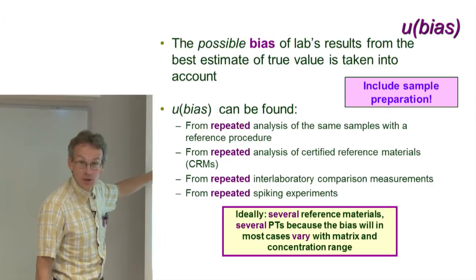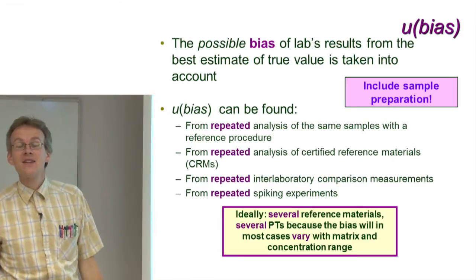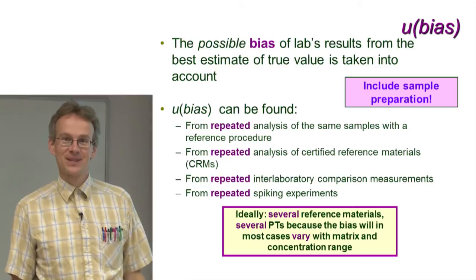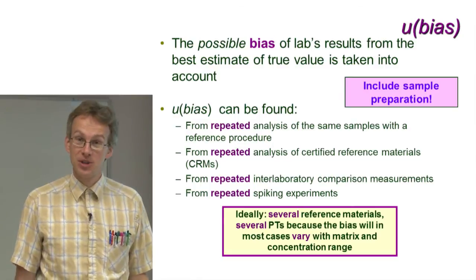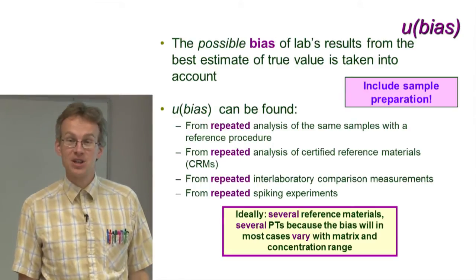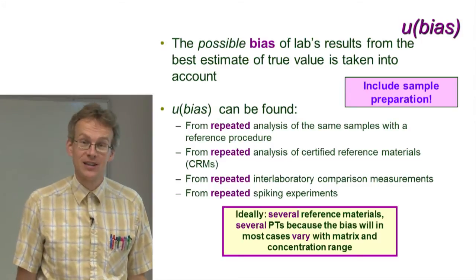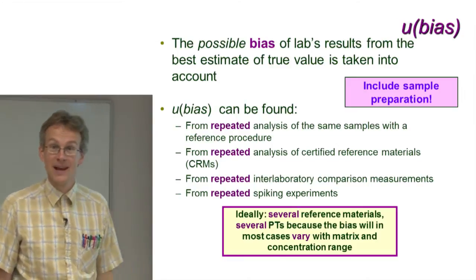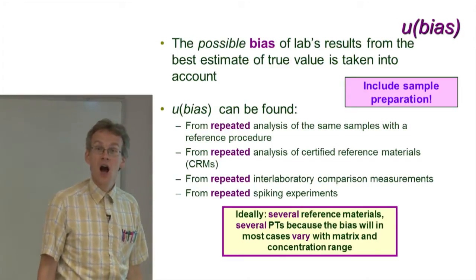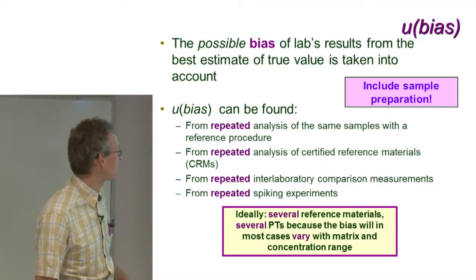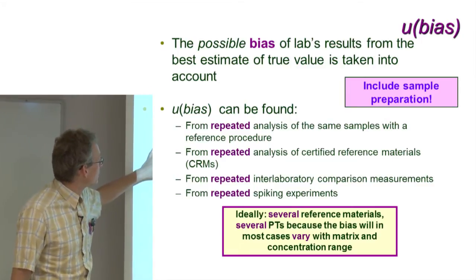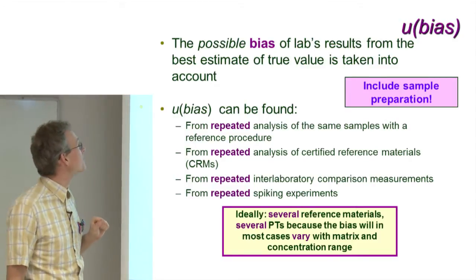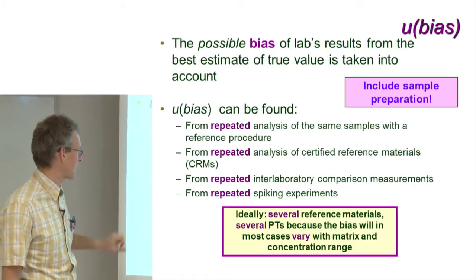The second option, which is also quite good, is that you buy certified reference materials. A certified reference material is a material very much like your real sample, but where the contents of certain analytes are known very reliably — they have been determined by expert laboratories using high-level analytical techniques. The reference values of certified reference materials are well suited as reference values for bias determination.